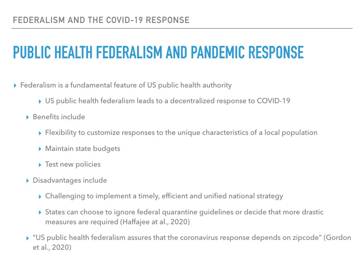As you will appreciate from that interactive, there have been varied state-level responses to the pandemic. The unique brand of U.S. public health federalism has its advantages, including the flexibility to customize responses to the unique characteristics of a local population, to maintain state budgets, and to test new policies. However, federalism can prevent obstacles to implementing a national pandemic preparedness and response strategy, especially one that is timely, efficient, and unified. The CDC's modern-day interstate authority is limited primarily to do-not-board orders to prevent air travel within the U.S. by persons known to be ill, and relies on state health departments to request that order.